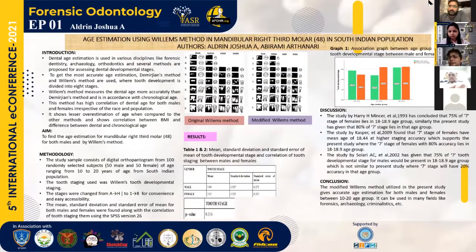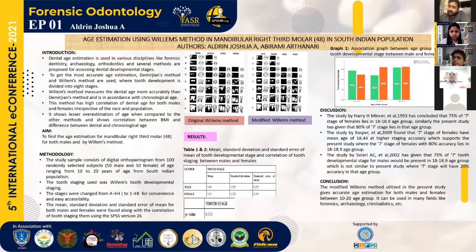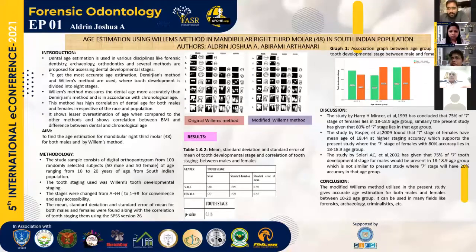Quite interestingly, some time back I happened to read a novel where a case under trial of a juvenile victim gets resolved using the estimation of his dental age, and he gets punished under law by proving that he is above 18 years of age. This led me to go a step further and get interested in doing this research, which is my topic of discussion for today: age estimation using Williams' method in mandibular right third molar 48 in South Indian population.